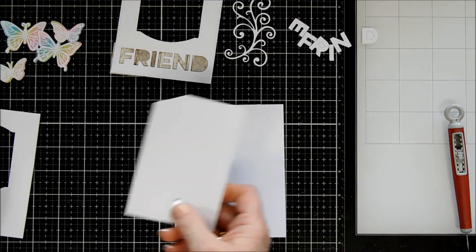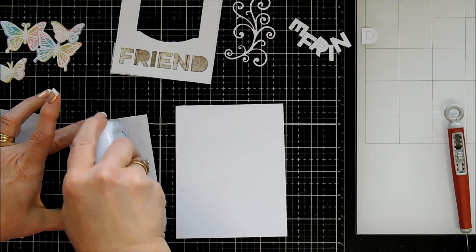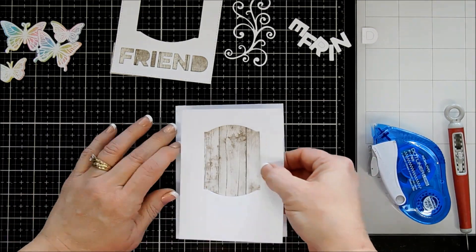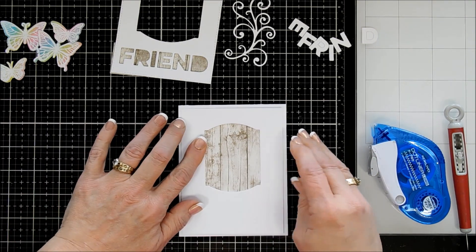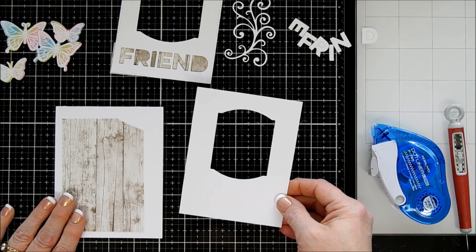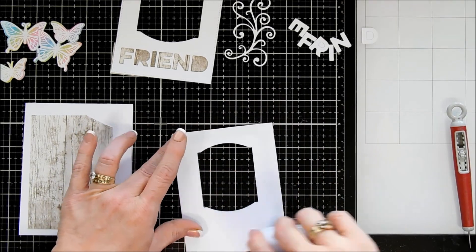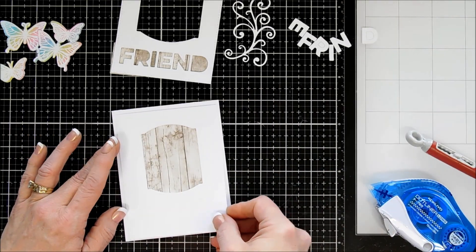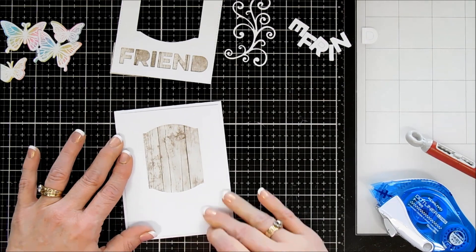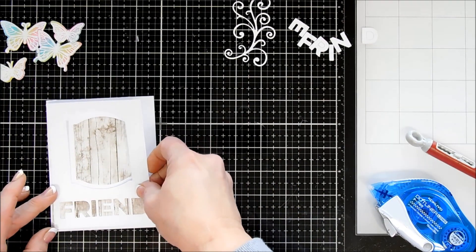Now we're going to take our card base which is a standard A2 size card base. I'm adding adhesive behind my wood grain pattern and I'm lining it up over my window frame here and then I press down. That way I know it's the perfect position to go behind this panel. We'll tape this panel right in the center of our card base. It is going to leave me a little bit of a border.